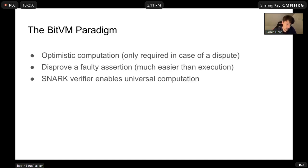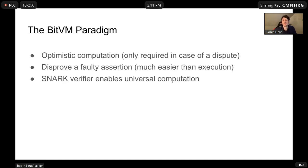We can use that to compute essentially any kind of function, but what we use it for in particular is a SNARK verifier. A SNARK is a succinct argument of knowledge — essentially a proof of computation. That allows us to compress essentially infinite amounts of computation into a constant-size proof. We can check that proof in BitVM simply by somebody asserting it is correct, and if it is incorrect, we disprove something about the computation.